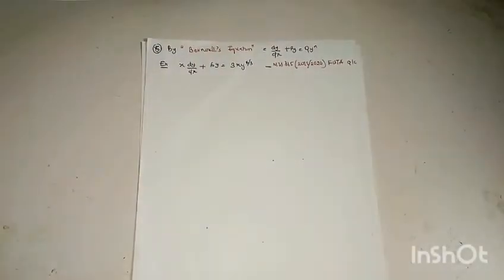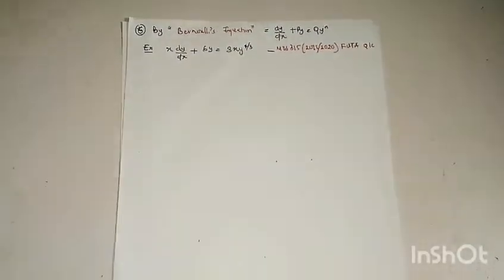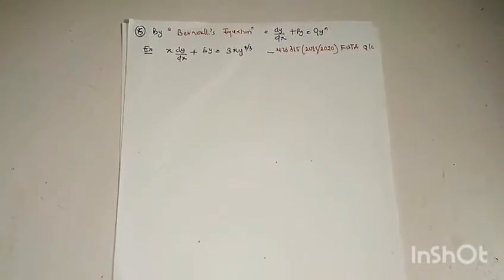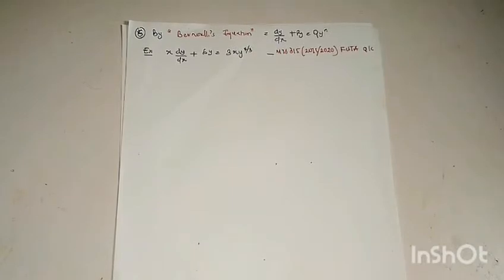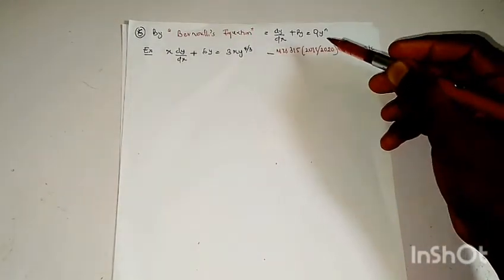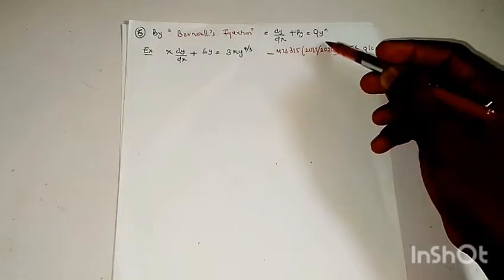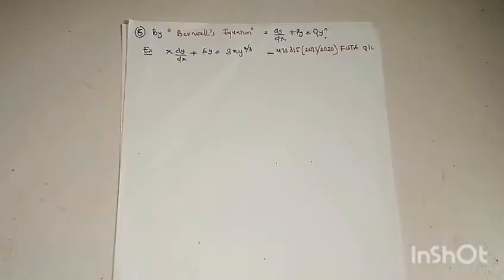The fifth method of solving differential equations is by Bernoulli's equation. This method is actually related to the integrating factor method, because we are going to be applying integrating factor method within Bernoulli's equation. The first step in solving Bernoulli's equation is to express it in the standard form. If the equation given can be expressed in this particular form, we solve using Bernoulli's equation.